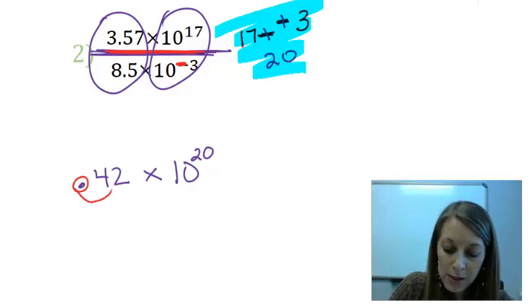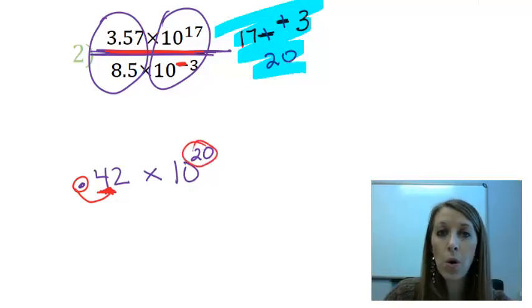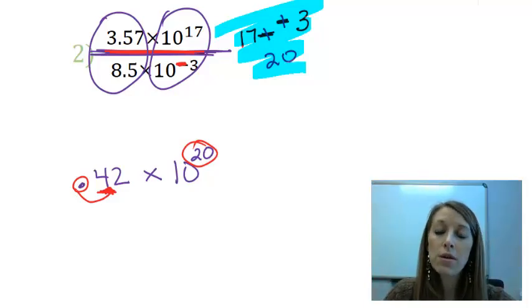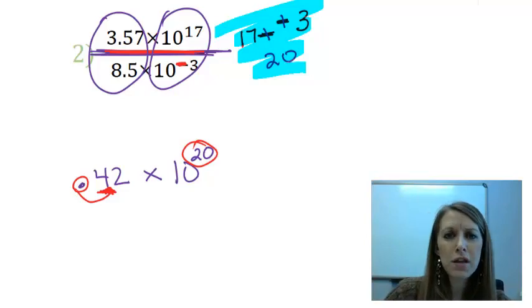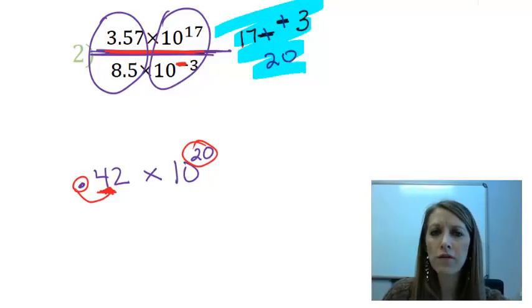I need to move my decimal over here. That moves my decimal one unit, and that's going to change my exponent by one unit. Now, does that mean it's going to go to 21, or does that mean it's going to go to 19? And this is very confusing, and it's very easy to get mixed around. I don't think about it as if I shift it this way, then I add or subtract, or if I shift it that way.